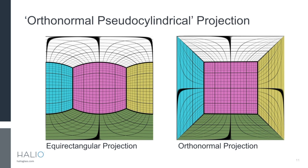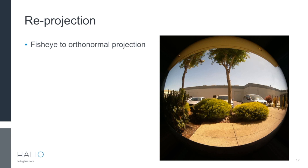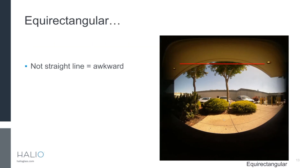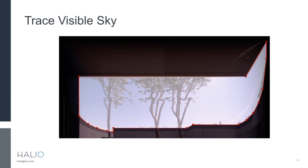In the orthonormal projection on the right, both horizontal and vertical lines are straight. This shows the reprojection: starting from a hemispherical fisheye, when reprojected you can see the top edge of the overhang above the window is straight, which is very helpful as we'll see. In comparison, with equirectangular projection the front edge of that overhang is not straight — quite awkward. So now that we've reprojected it, we want to trace our visible sky, and it's much easier to trace those straight lines on the horizontals and verticals.